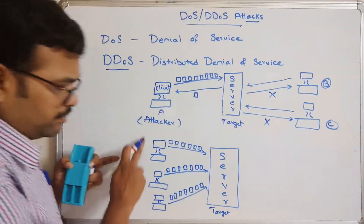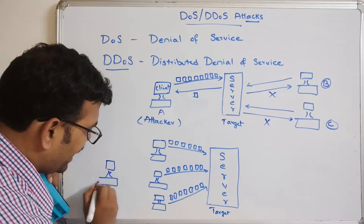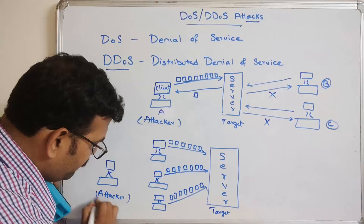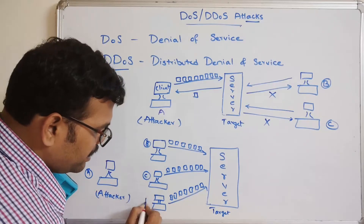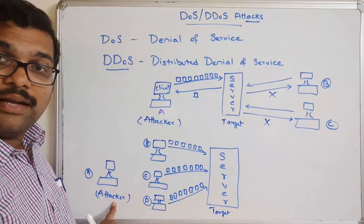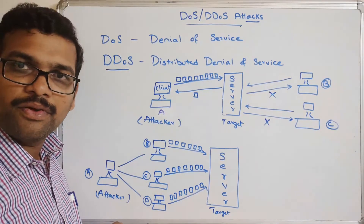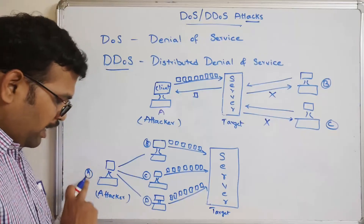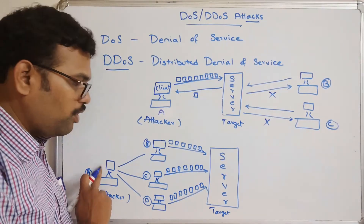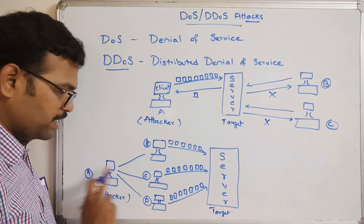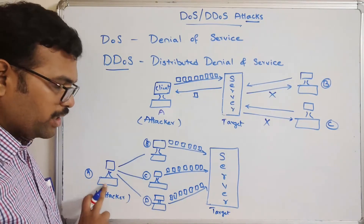In a DDOS attack, there is one attacker system — let's call it A — and other systems B, C, and D. The attacker finds vulnerabilities and sends malware to the other systems on the network, infecting them. System A gets control of B, C, and D by sending malware. Once A has control of all other systems, it ensures that a flood of requests is sent by B, C, and D simultaneously to the server.